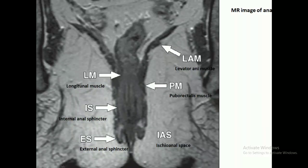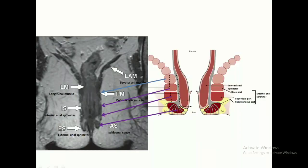This is the location of the external anal sphincter, and this is the location of the internal anal sphincter. This is the puborectalis muscle, and this is the levator ani muscle. This is the ischiorectal space. This is the subcutaneous part of the external anal sphincter, this is the superficial part, and this is the deep part.